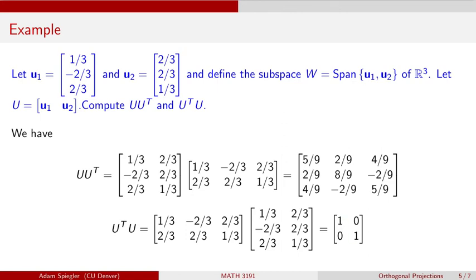When we take the product in the other order, we get a 3×3 matrix, but this is not the identity matrix. So just be aware that we get the identity matrix when we take one of these products, but we don't necessarily get the identity matrix when we take the product in the other order.